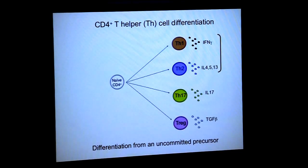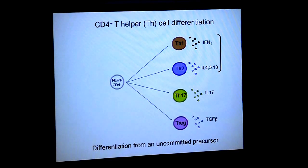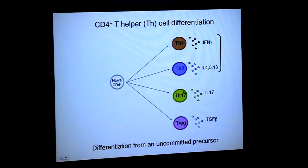From a developmental point of view, you can make, from a naive uncommitted precursor — a naive CD4 T cell — depending on the environment surrounding these cells and the signals received after activation, you can have separate development of TH1 cells, TH2, TH17 and Tregs. For the purpose of this talk I'm going to focus on the first described subsets of T helper cells: TH1 and TH2.